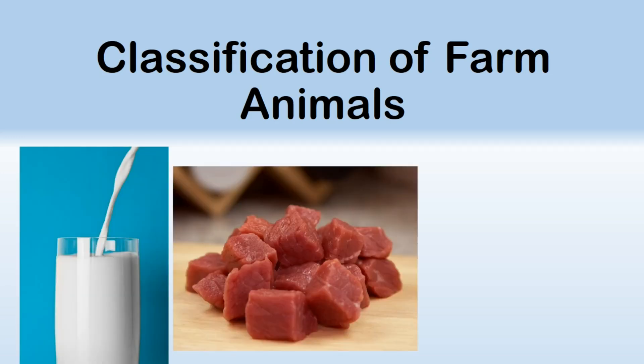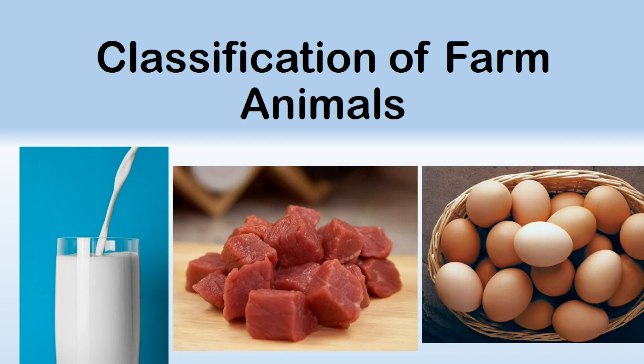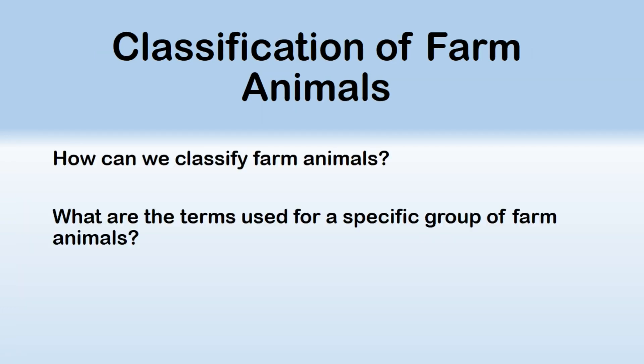Hello everyone. In this video I will be talking about the classification of farm animals. As you know, farm animals are those animals which are raised at farms for milk production, for meat production, for egg production, etc. These animals include sheep, goat, camel, and many more.